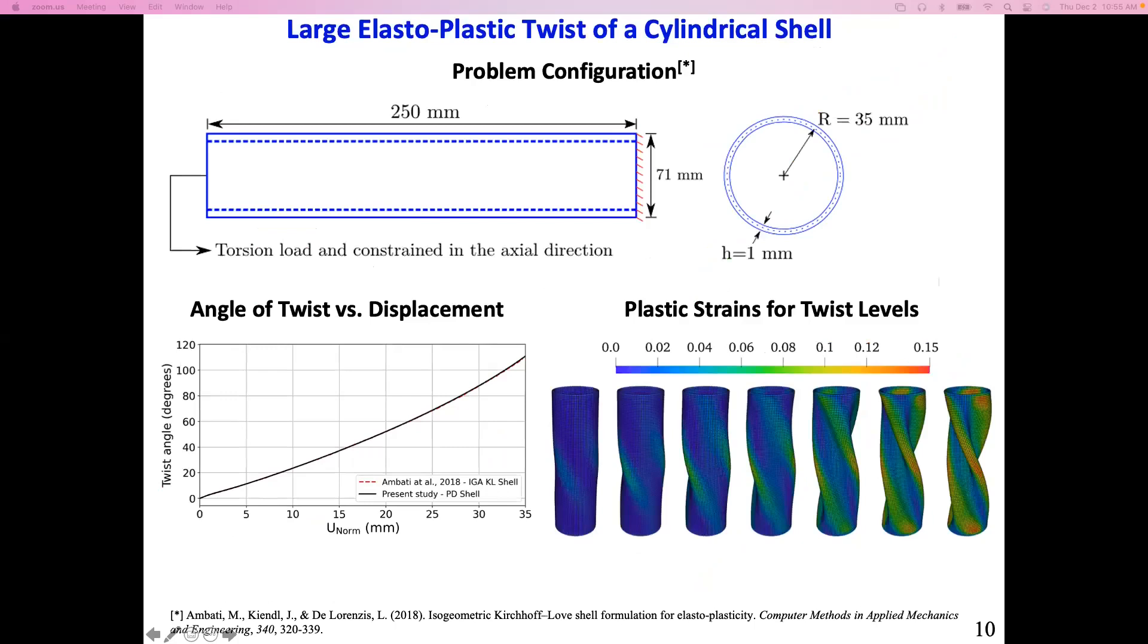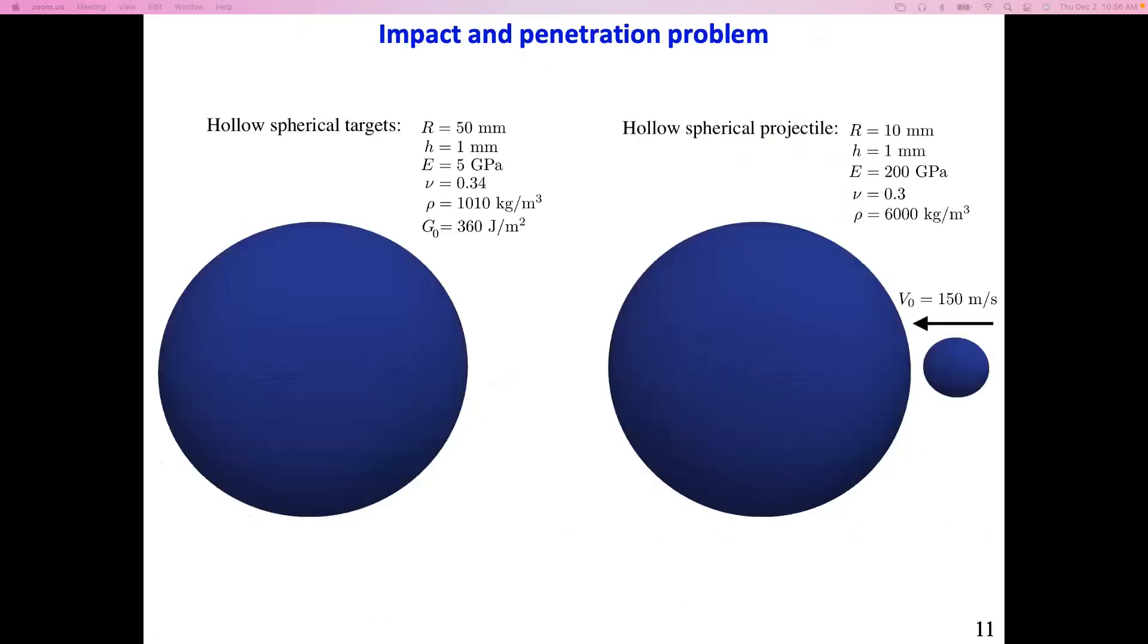Another numerical example is one where we take a piece of coupon and fix one end and apply torsion on the other end. We compare the twist angle with respect to the L2 norm of the entire displacement field. As you can see, we are able to reproduce the results coming from FEA and IGA sites using traditional thin shell formulations with very good agreement. On the right-hand side, you see the plastic strain distributions for different twist angle levels. We are able to represent very complex stress states without running into any issues in a very robust fashion.